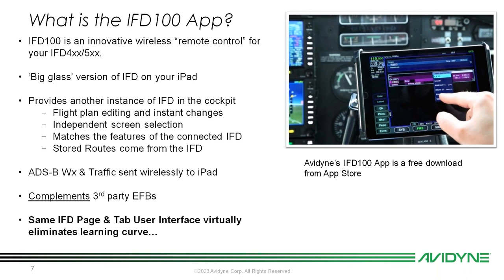IFD100 allows you to edit your flight plans with instant changes. It features independent screen selection, so you don't have to be looking at the same screen on the IFD versus the iPad. You'll be able to change your frequencies, see active and standby for COM and NAV, and customize data blocks. The stored routes that show up on your IFD100 come from the IFD itself, so there's not two different banks of stored routes — it pulls that information from the panel-mounted IFD.